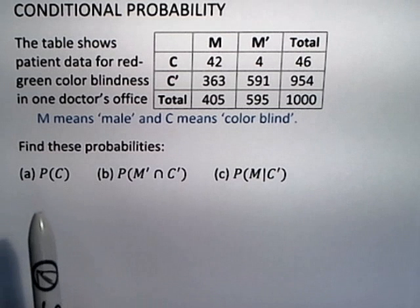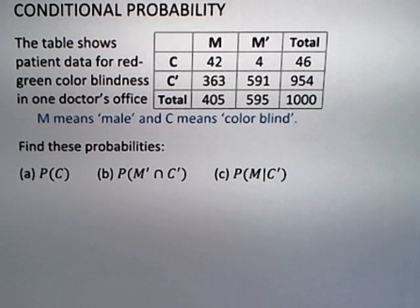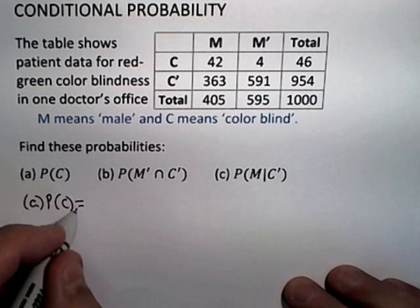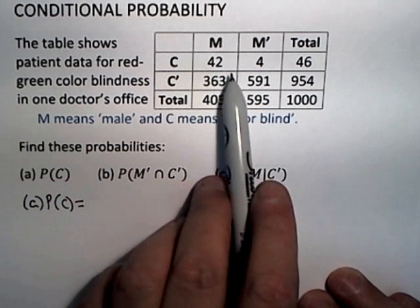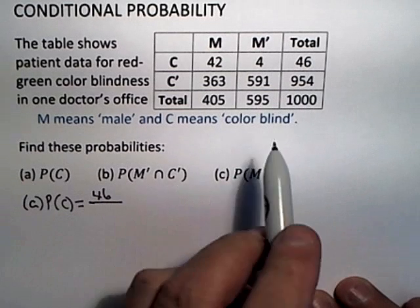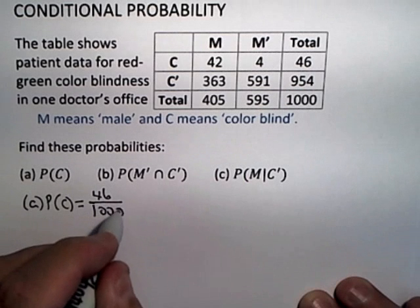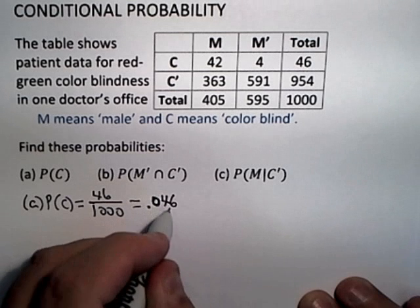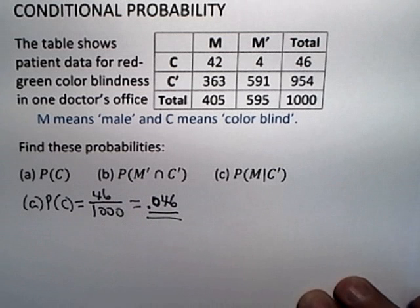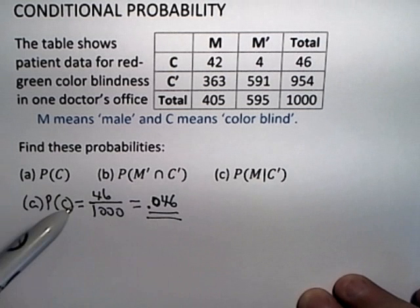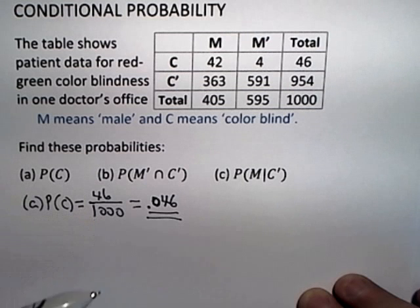We want to calculate these probabilities. The first thing we want to calculate is the probability of a patient in that doctor's office being colorblind. You look in the colorblind row and you see that there are 46 of them out of a total of a thousand patients. The probability, written as a decimal to three decimal places, that a patient in this doctor's office is colorblind is 0.046, the basic probability principle 46 out of a thousand.